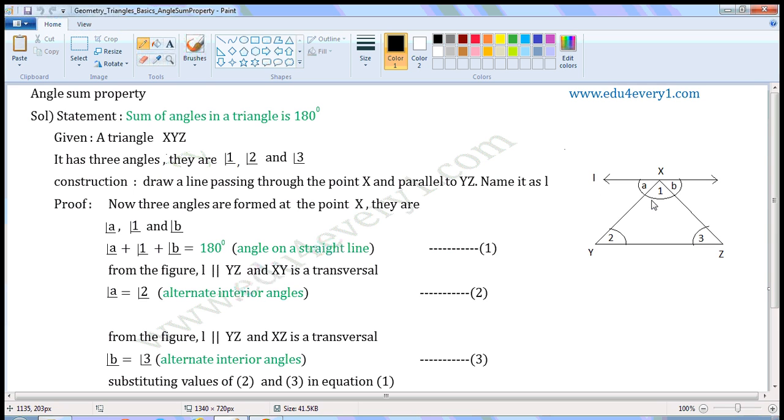Now, three angles are formed at the point X. They are Angle A, Angle 1, and Angle B.